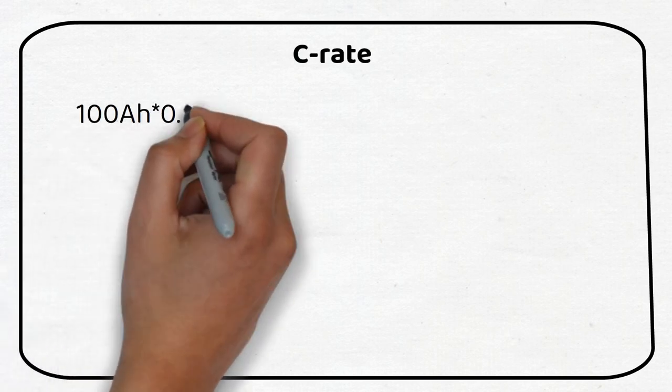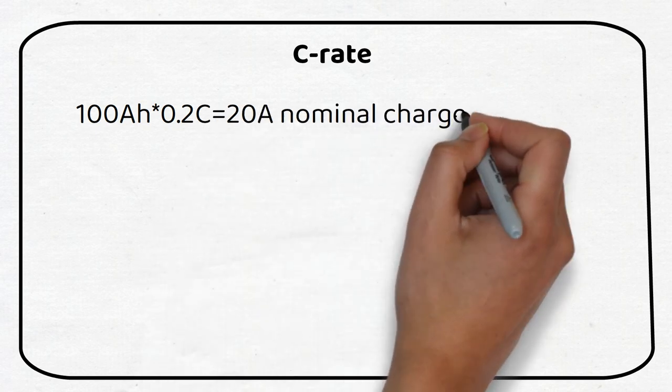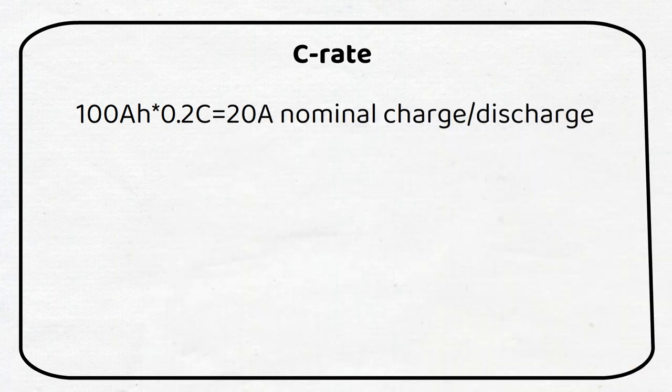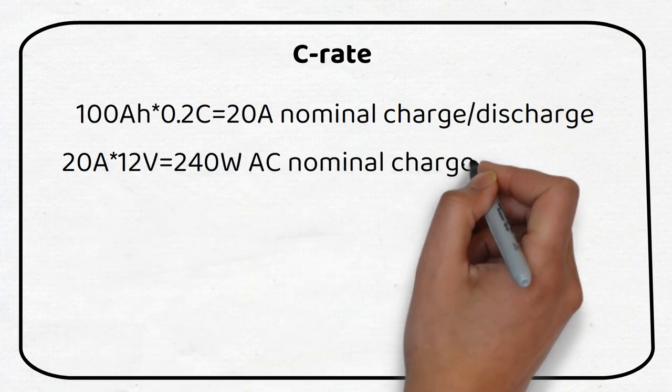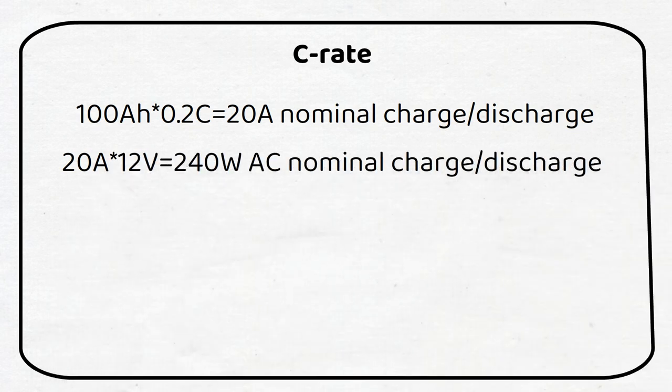What about the C rate? The normal C rate of lead acid battery is 0.2 C. This means that our 100 amp hour battery can deliver a nominal charge and discharge current of 20 amps. If we calculate this it's only 240 watts.